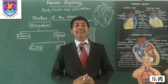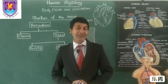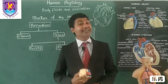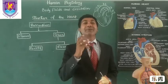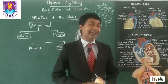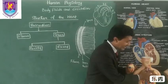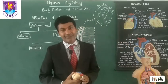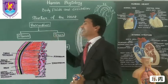Heart is mesodermal in origin, that means it forms from the mesodermal embryonic layer. It is a thick-walled muscular pulsating organ which is situated in the mediastinum of the thorax. Mediastinum is the region between the two lungs in the thoracic cavity, and that is where the heart is located.